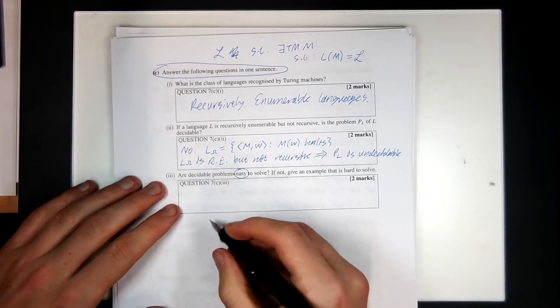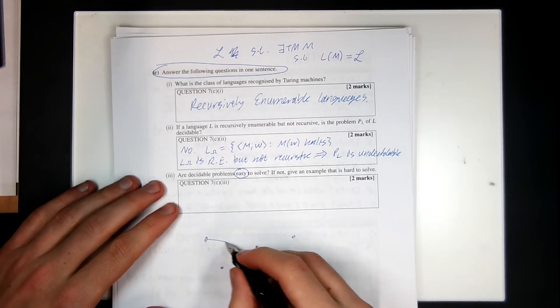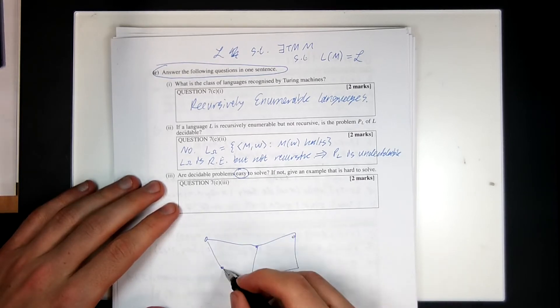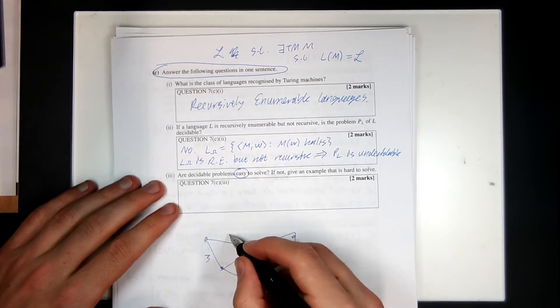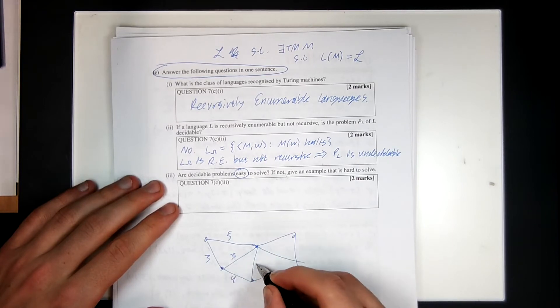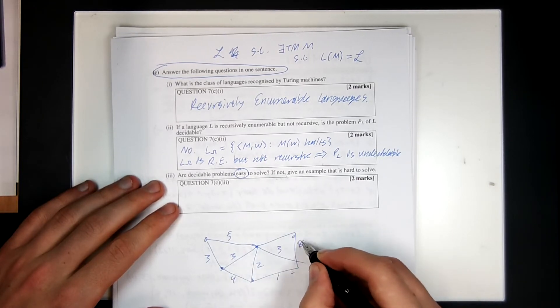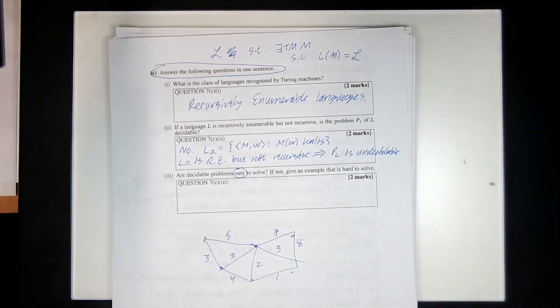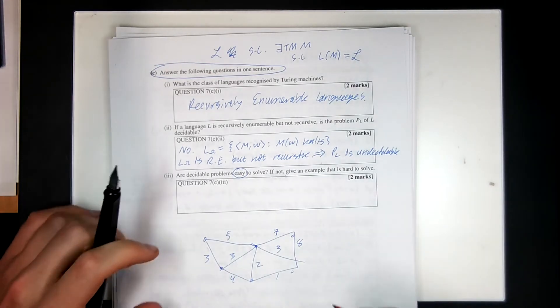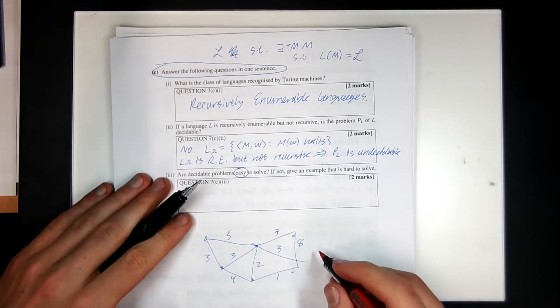Another example is the traveling salesman problem. Given a graph with a bunch of cities and a bunch of distances between cities, we want to know what's the minimum path that goes through all the cities.